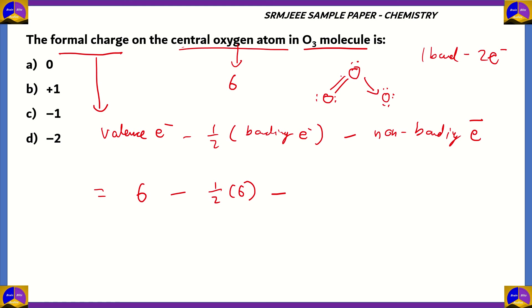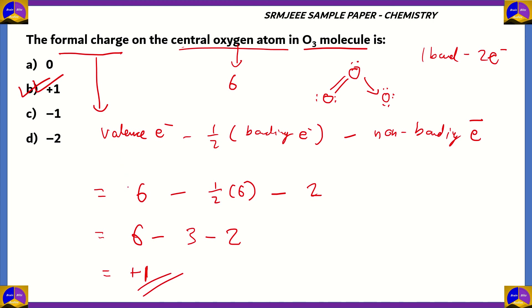The non-bonding electrons on the central oxygen atom are one lone pair, which means two non-bonding electrons. So the formal charge equals six minus three minus two, which gives one. Therefore the correct answer is option B: plus one, indicating a positive charge on the central oxygen atom.